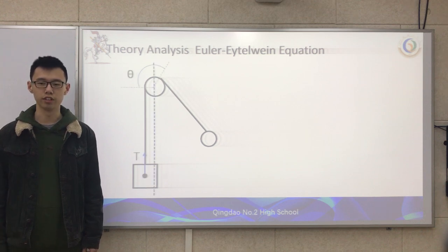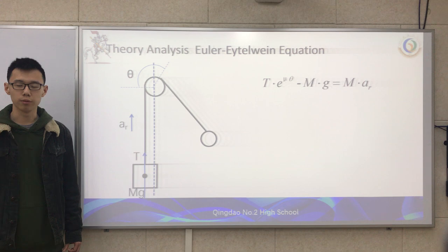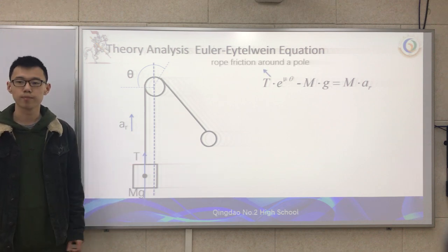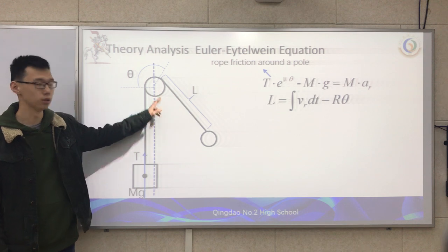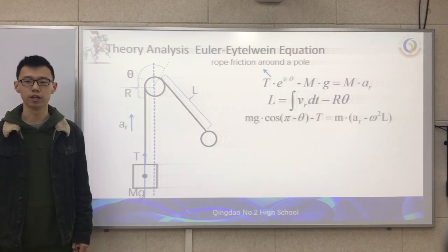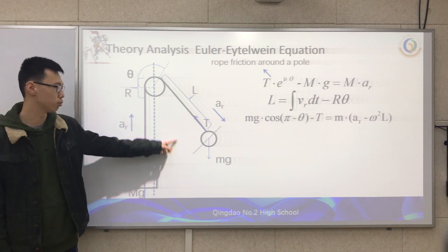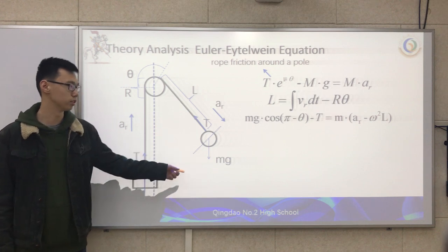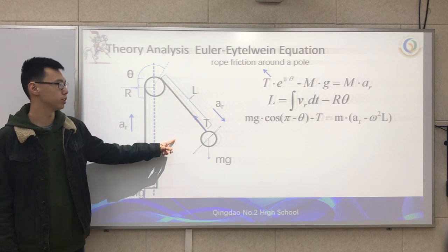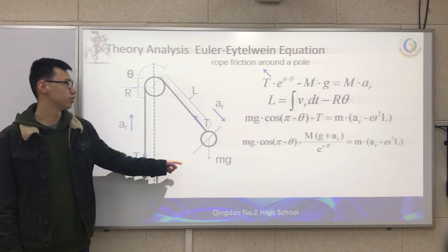For the light object, it has an initial winding angle theta. For the heavy object, it has tension upward and gravity downward, and will also have acceleration upward, giving us the equation of motion for the heavy object. The first term is the rope friction around the rod. The distance between the light object and the rod is L, and L is conserved. Taking the normal direction with downward as positive, the light object has tension upward, a component of gravity downward, acceleration downward, and centripetal acceleration upward. We can list the equation and substitute T to obtain a combined equation.